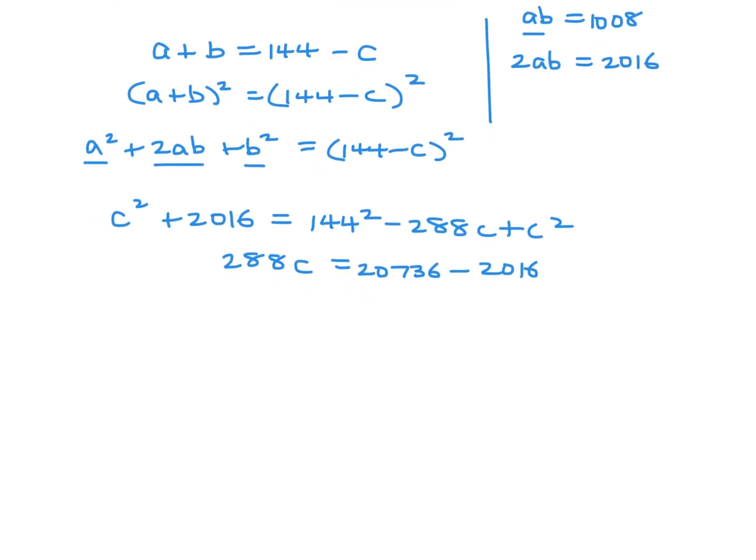So that becomes 2016. And there we go. We got basically, with the help of this nice clue, an equation with just one variable. And now, now I'll expand it. So 144 squared minus 288C plus C squared. And C squared's cancel, which is very nice. And let's try to solve this. So 20736 minus 2016, therefore 288C, I think C in this case is going to be 65. And that solves number two.